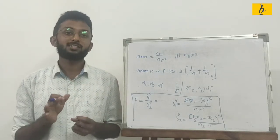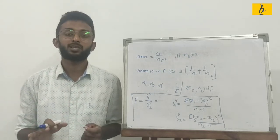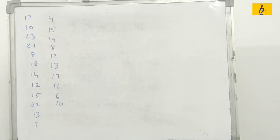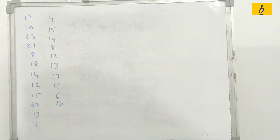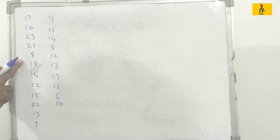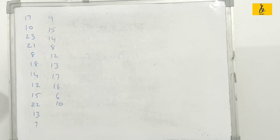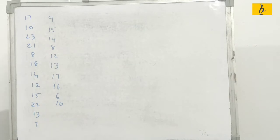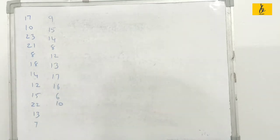A random sample of 10 children fed on data P showed the following values. Another random sample of 10 children fed on data Q showed following values. We need to make various analyses and show that the estimates of population values from these samples are not significantly different.